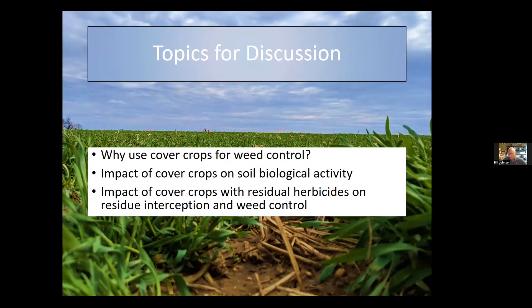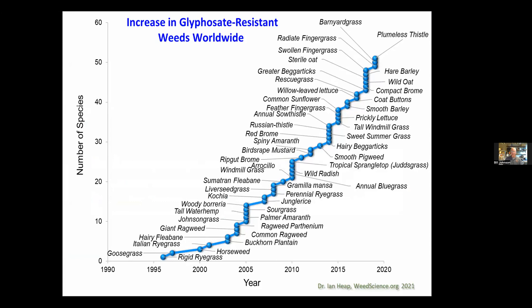To establish why we're using cover crops for weed control: this graphic shows the documentation of glyphosate-resistant weeds. From about 1995 to present, we have anywhere from one to five new weeds each year documented to be resistant to glyphosate or Roundup. In our corn and soybean production systems in the Midwest, glyphosate is easily the most widely used herbicide. As we develop more glyphosate-resistant weeds and increased infested areas, we obviously need more tools for controlling weeds.